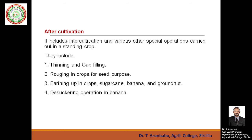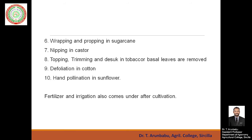Desuckering in banana involves removal of suckers that grow beside the main stem. Wrapping and propping in sugarcane involves removing dried or bottom leaves, preparing them into rope-like structures, and tying the sugarcane sets to give mechanical strength and reduce lodging. Nipping in castor is done mainly to reduce vegetative growth by removing the top vegetative branches. Topping, trimming, and desuckering in tobacco — and removal of basal leaves — also come under intercultivation.